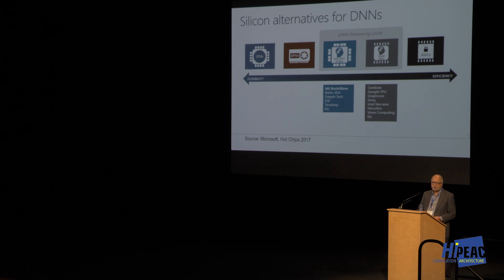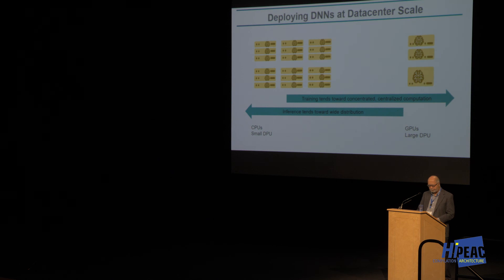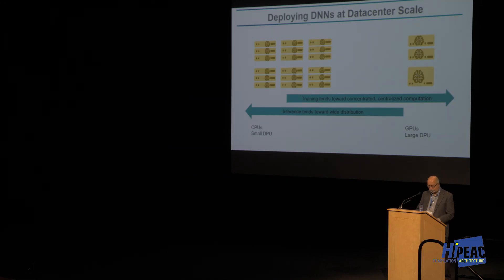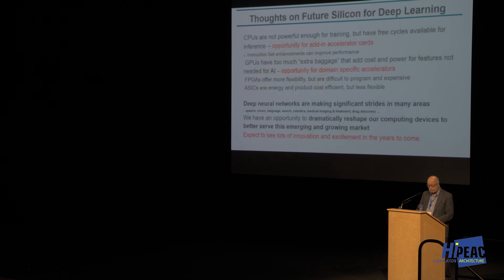Because the volume for inference is higher, the cost and power have to be lower. You tend to go with smaller, more efficient solutions for inference. On the training side it's okay to have a power-hungry GPU or large DPU at 300 watts or higher costing a couple thousand dollars. On the inference extreme, the power budget is probably 50 watts and the cost is typically less than $500.